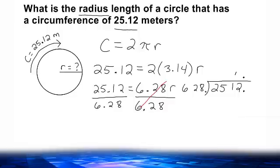628 can be divided into 2512 exactly 4 times, leaving us with no remainder. So we would say the radius of this circle is exactly 4 meters.